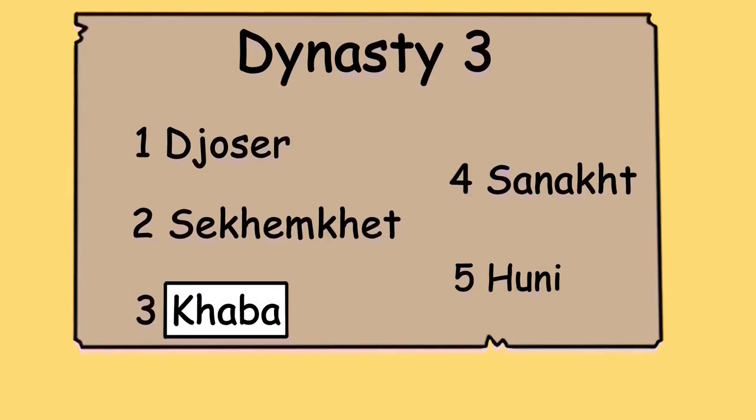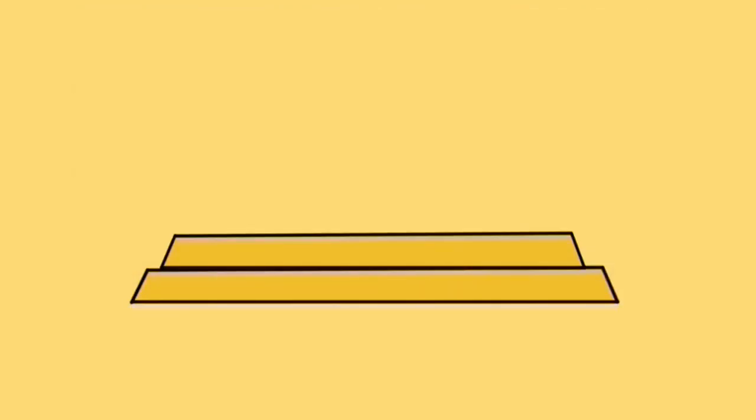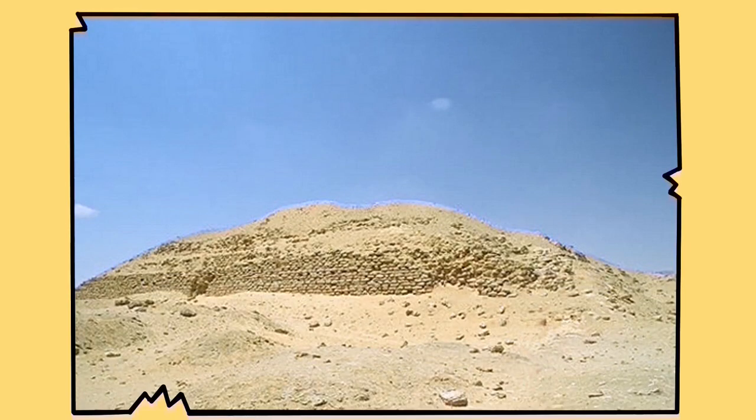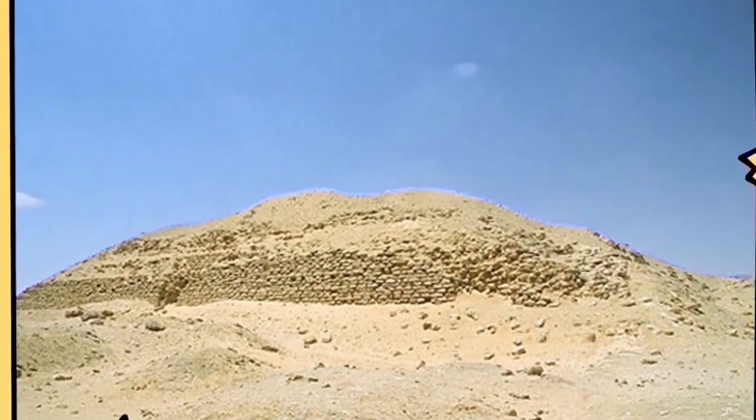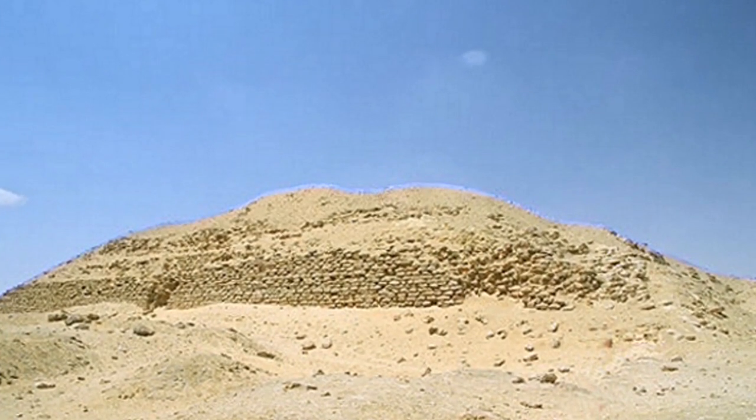His successor Khaba suffered the same fate. Only two steps remain today with what has become known as the Layered Pyramid. Again, another short reign of about six years left this pyramid unfinished. Both pharaohs gambled on large construction projects and failed due to their untimely deaths, and their ventures remained unfinished and unused.